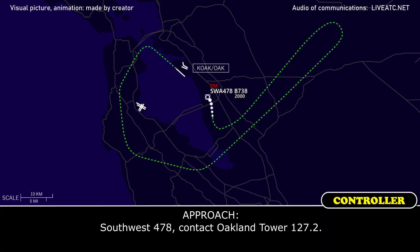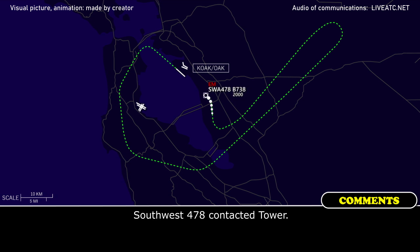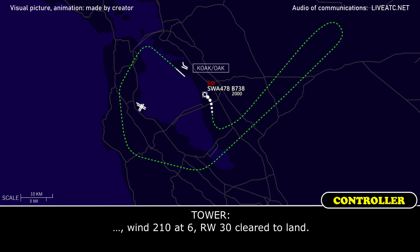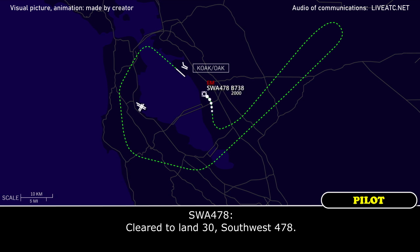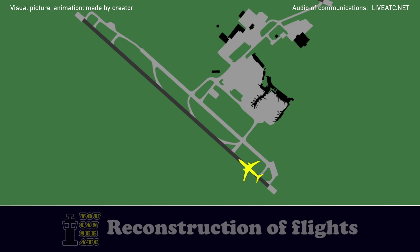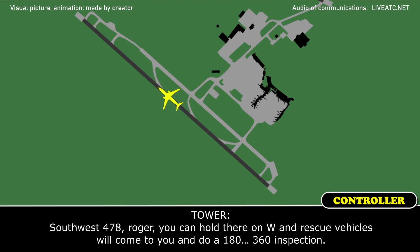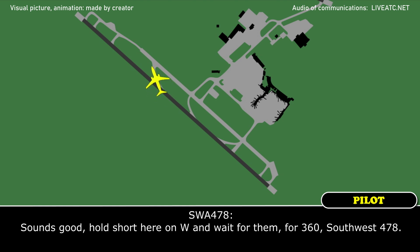ATC: Southbound 478, contact Oakland Tower 127.2. Southbound 478: Good day, southbound 478. Tower: Wind 210 at 6, runway 30, cleared to land. Southbound 478: Cleared to land runway 30, southbound 478. Tower: Southbound 478, you can hold there on Whiskey and the vehicles will come to you for the 360 inspection. Southbound 478: Roger, we'll hold short on Whiskey and wait for them to complete their inspection, southbound 478.